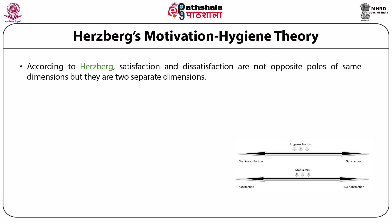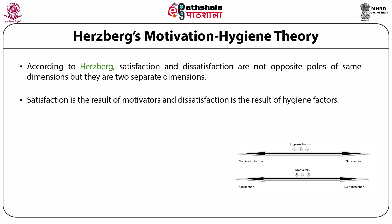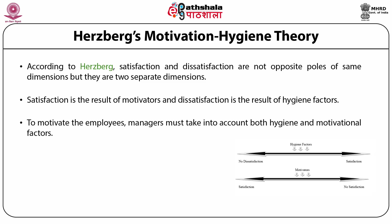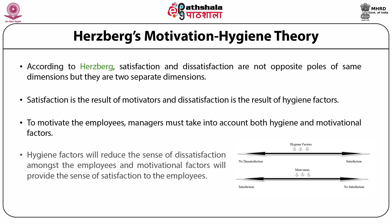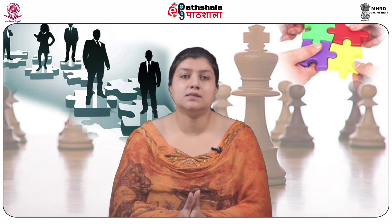According to Herzberg, satisfaction and dissatisfaction are not opposite poles of the same dimension but are two separate dimensions. Satisfaction is the result of motivators and dissatisfaction is the result of hygiene factors. In order to motivate employees, managers must take into account both hygiene factors and motivational factors. Hygiene factors will reduce the sense of dissatisfaction and motivational factors will provide the sense of satisfaction to employees.